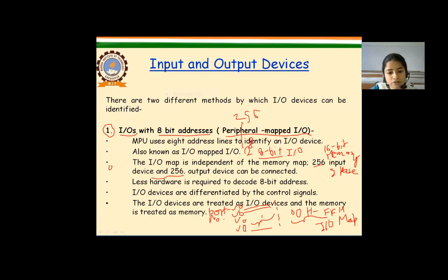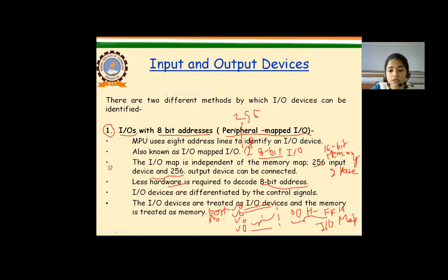Comparing with the next method, in this 8-bit addressing mechanism less hardware is required, because only an 8-bit address needs to be decoded. In the next method, 16 bits need to be decoded, which requires more hardware. So in this type of addressing mechanism, less hardware is required since there are only 8 address lines.